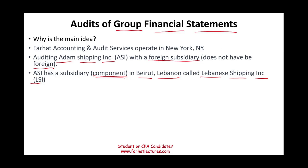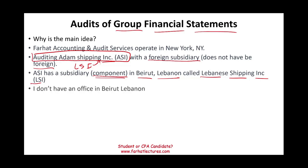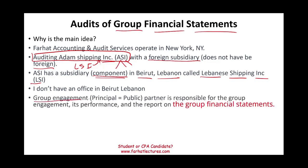Since I am the auditor of Adam Shipping Company, I am the auditor of the parent company, and LSI is part of ASI. Therefore, when I have to audit, I have to audit the whole group — ASI, and they might even have subsidiaries in Dubai and Egypt. I have to audit all of them, but I happen not to have an office in Beirut, Lebanon, where that location is being audited. I am the principal, the group engagement partner. I'm responsible for all these companies, ASI and its components. The group engagement partner, which is Farhat Accounting and Audit Services, is responsible for the group engagement, its performance, and the report on the group financial statements.